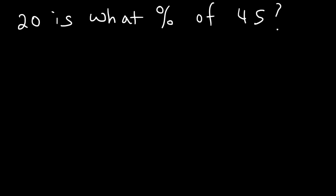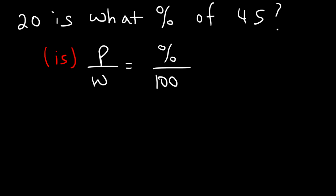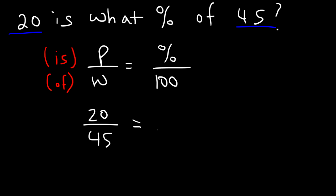There's something important to add to this equation. The part is associated with the word 'is', or the number associated with the word 'is'. And the whole is the number associated with the word 'of'. So you need to recognize that 20 is the part, 45 is the whole, and we're looking for the percentage. So P is 20, W is 45, and the percent — since that's what we're looking for — let's call it X over 100. Now we need to cross multiply.